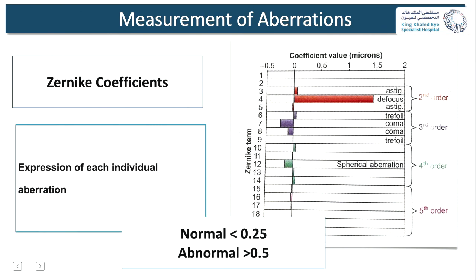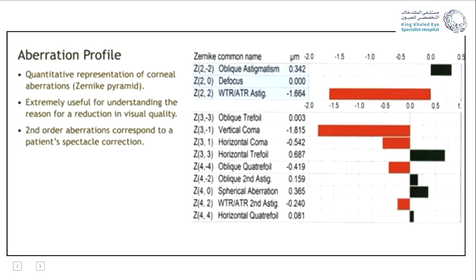This representation of the aberration profile and quantification allows us to identify exactly which high order aberration is affecting visual quality.